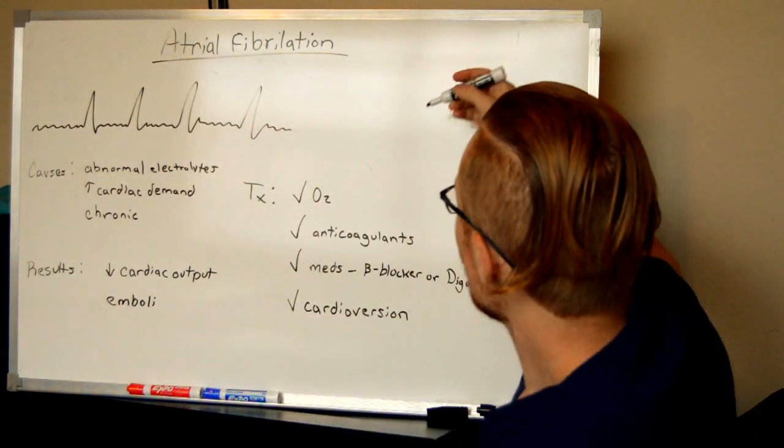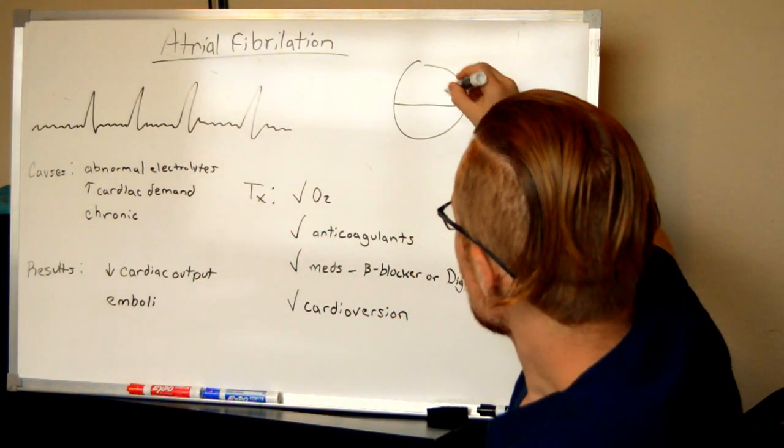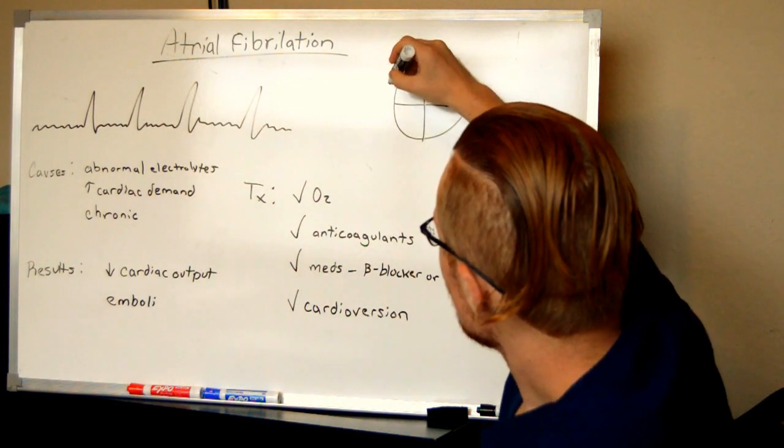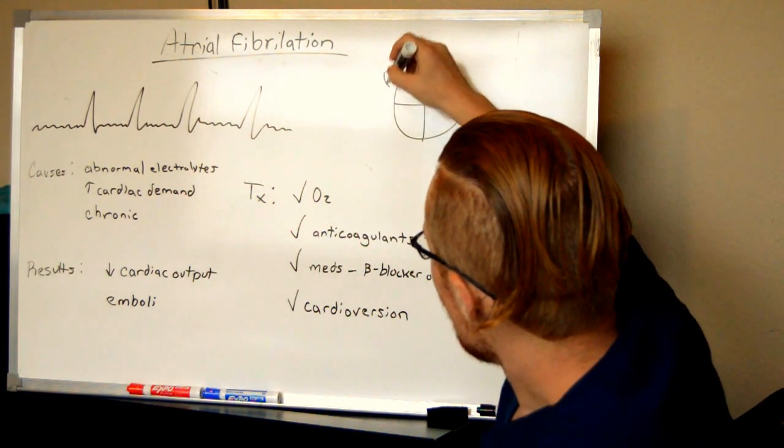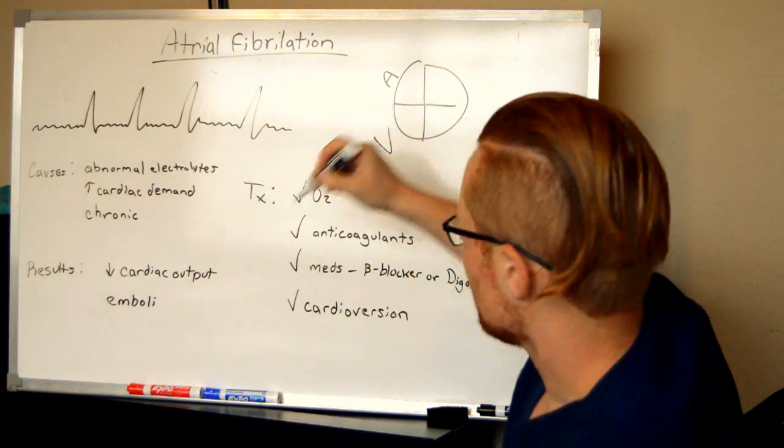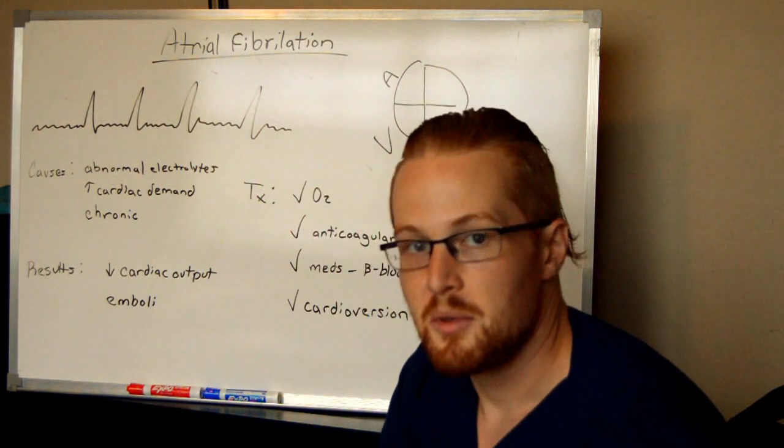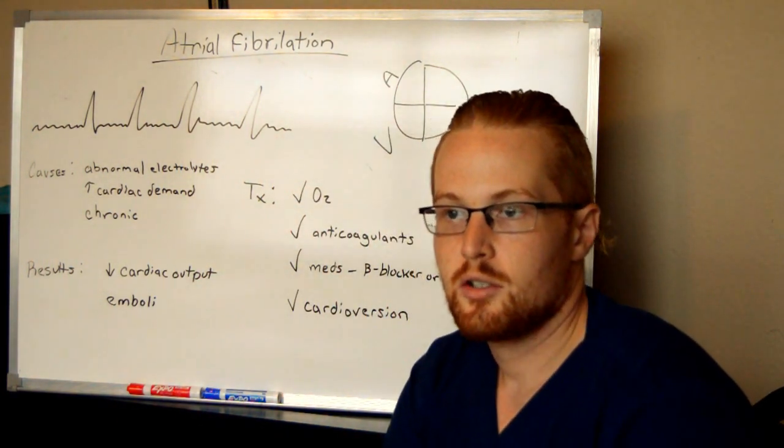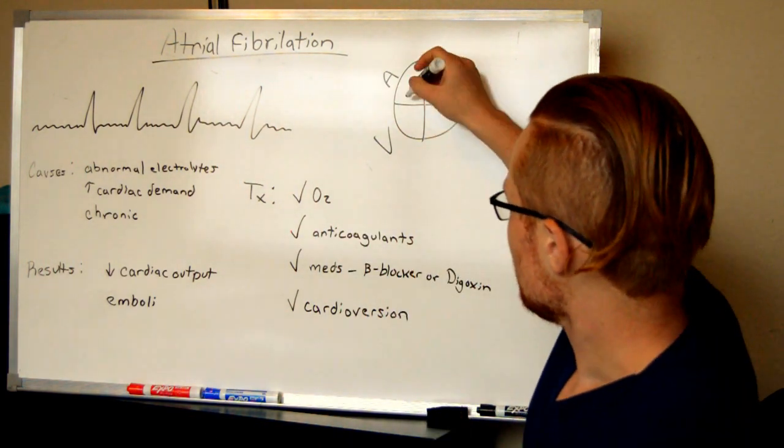So if you remember, the heart has four chambers. The top two chambers are the atriums and the bottom two chambers are the ventricles. The job of the atria is to supply blood to the ventricles.